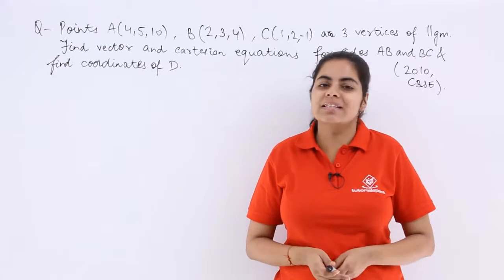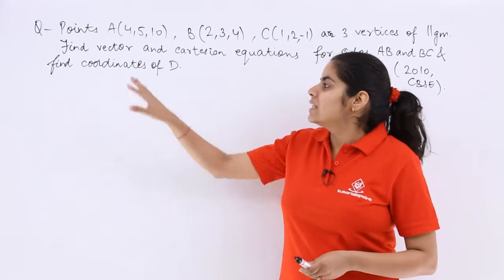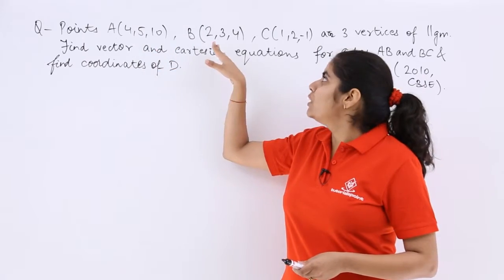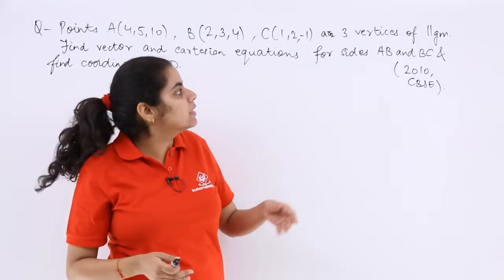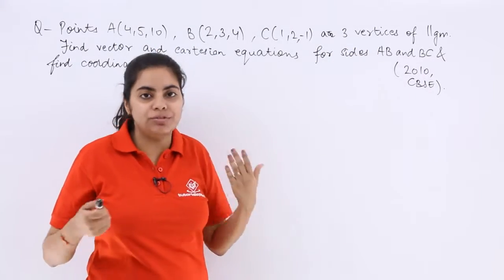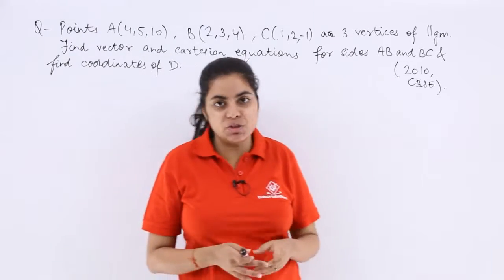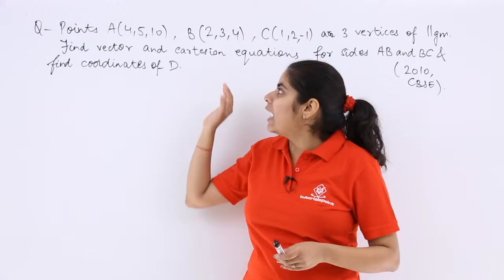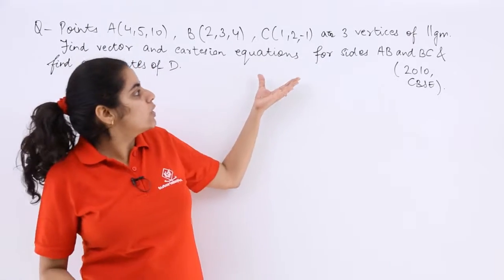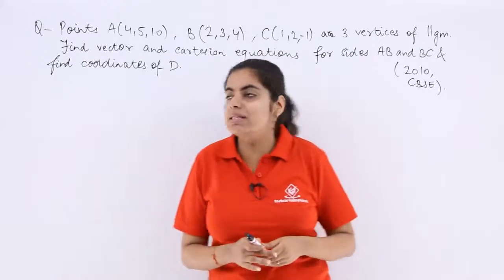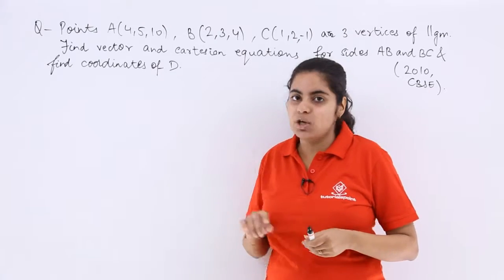This question has been asked in the CBSE 2010 paper. It says points A(4,5,10), B(2,3,4), and C(1,2,-1) are the three vertices of a parallelogram. You know there are four vertices but three vertices are given to you.